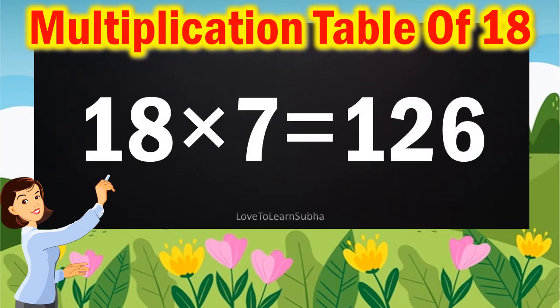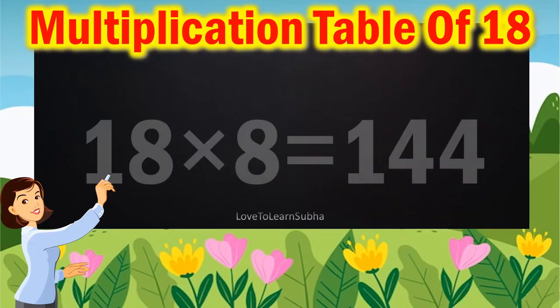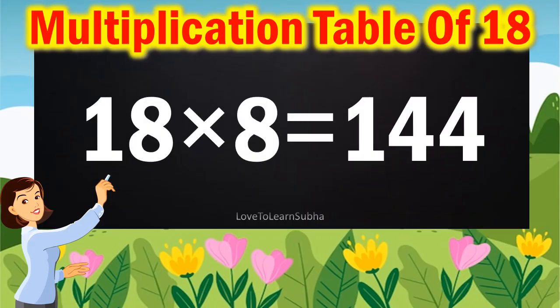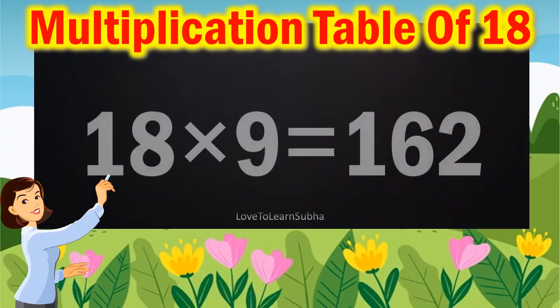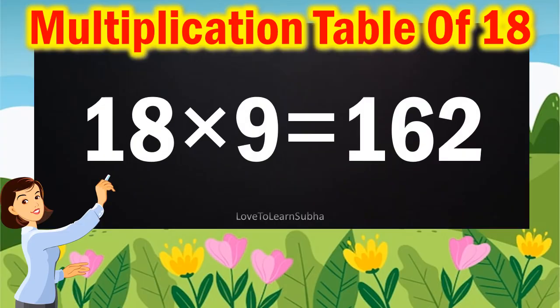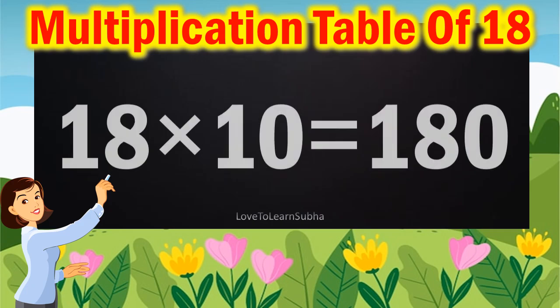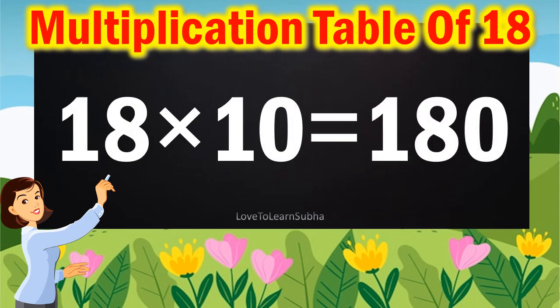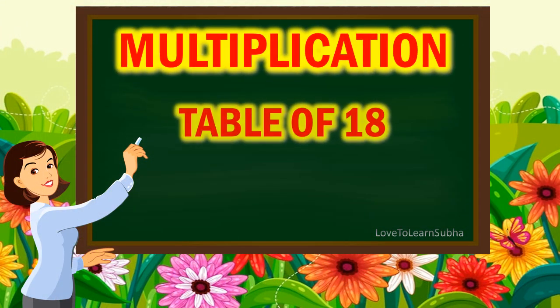18 7's are 126, 18 8's are 144, 18 9's are 162, 18 10's are 180. Now let's repeat it once again.